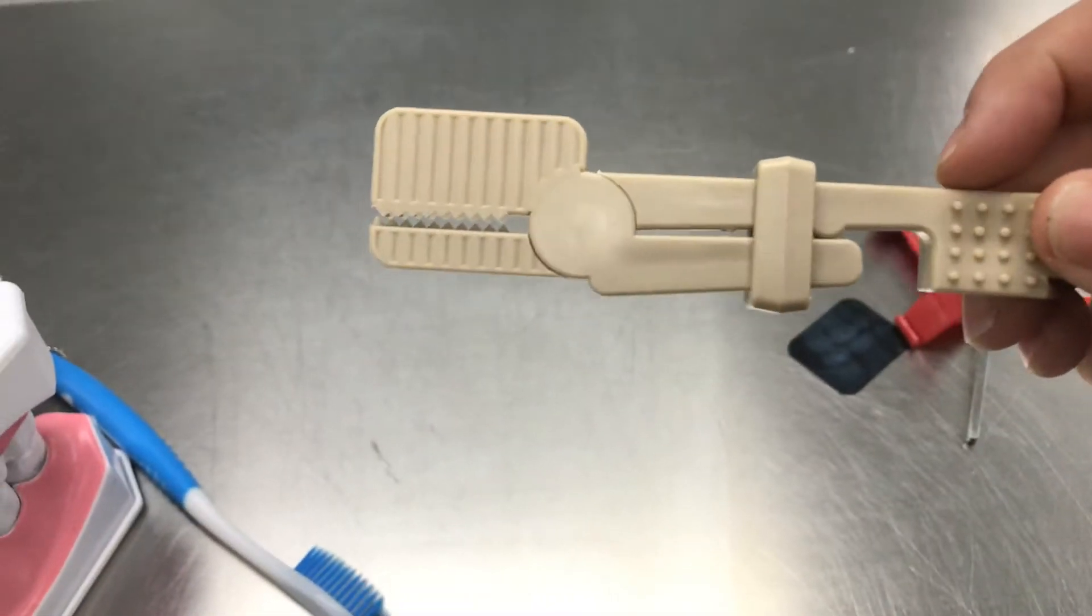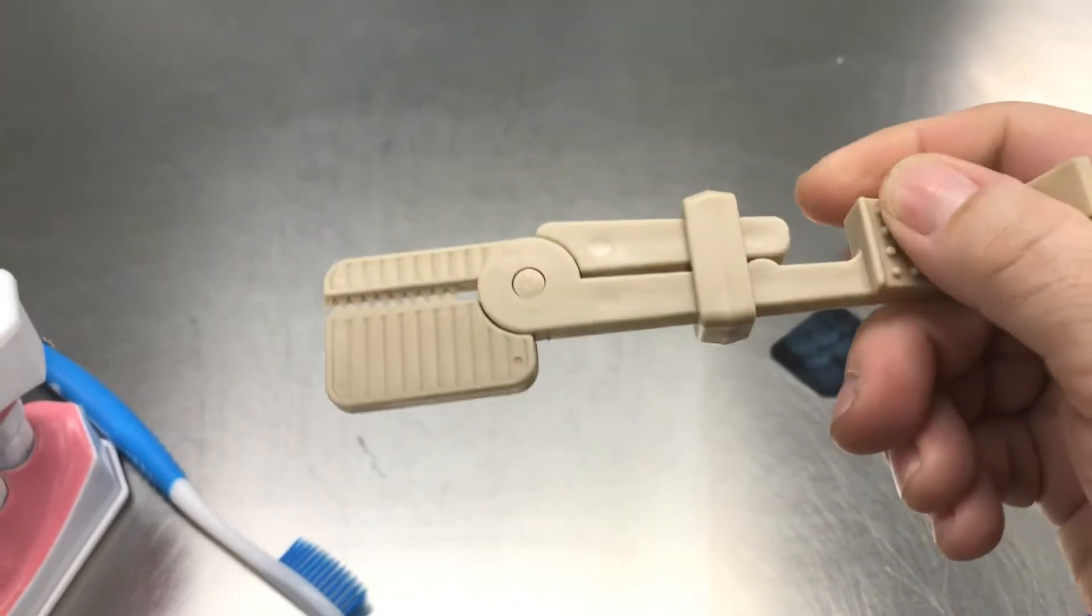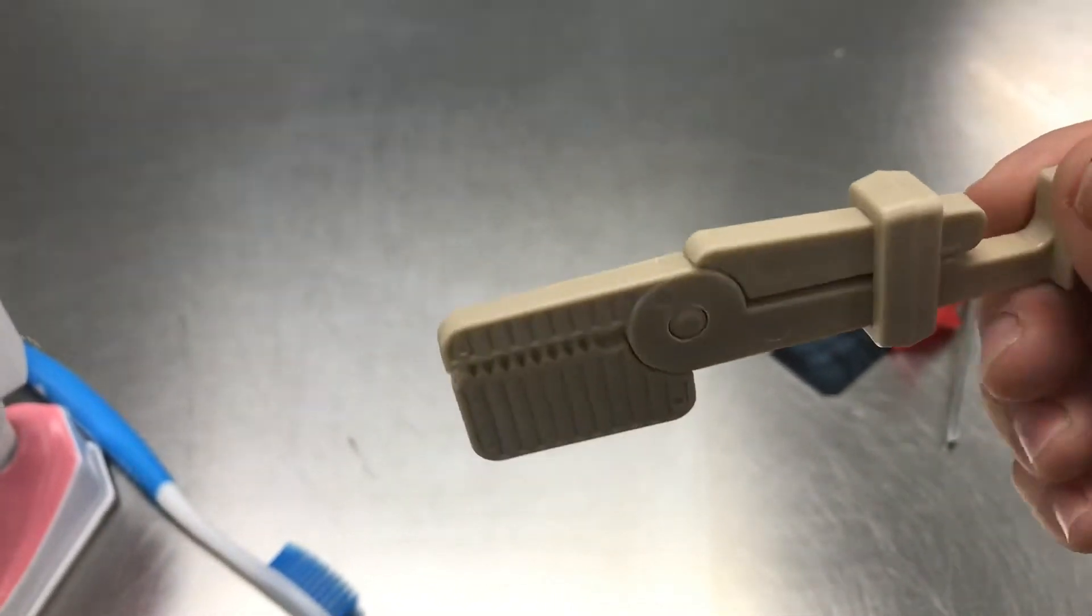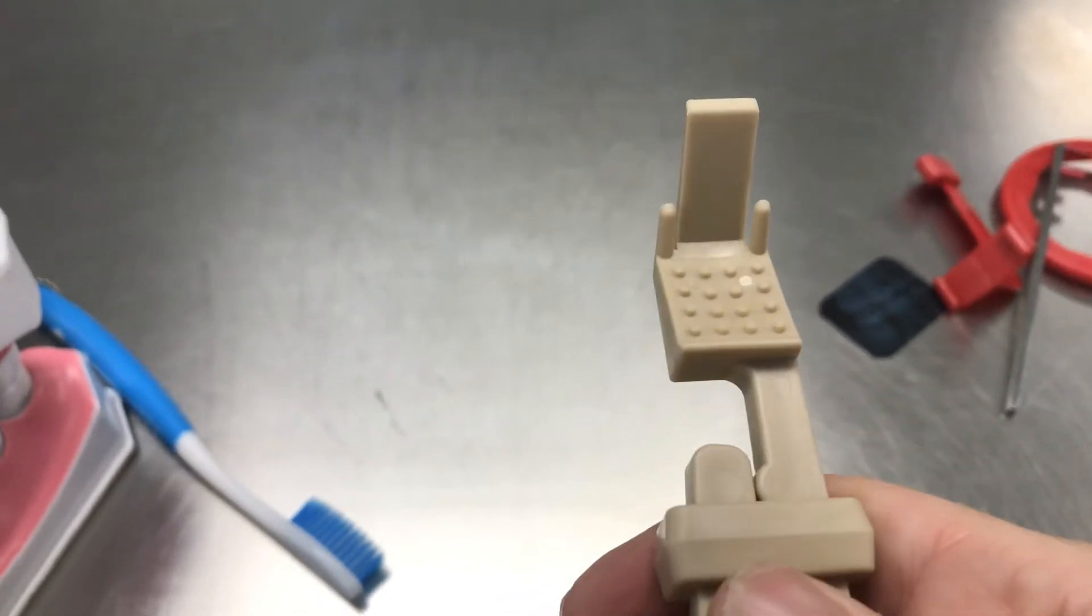This is called a snap array x-ray holder. This is what I started with. We use this for the posterior teeth, and then you use this side for the anterior teeth.